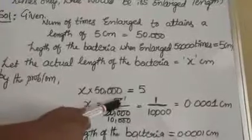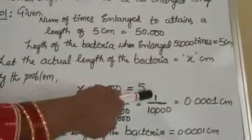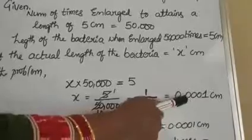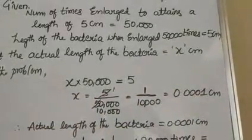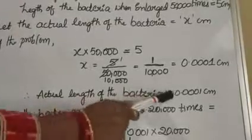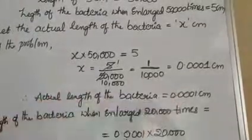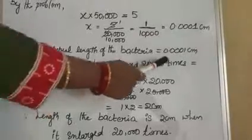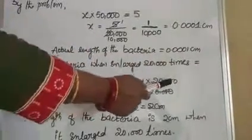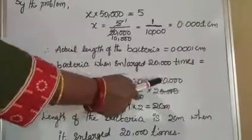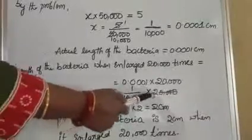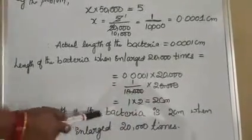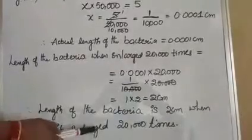Therefore, x is equal to 5 divided by 50,000, which equals 1 by 10,000. Converting to decimal form, we get 0.001 cm. Therefore, the actual length of the bacteria is 0.001 cm. Now we find the length of the bacteria when it is enlarged 20,000 times. The length equals actual length multiplied by 20,000, which is 0.001 into 20,000. In fraction form, that is 1 by 10,000 into 20,000. Cancelling the zeros, we get 1 into 2, equal to 2 cm. Therefore, the length of the bacteria is 2 cm when it is enlarged 20,000 times.